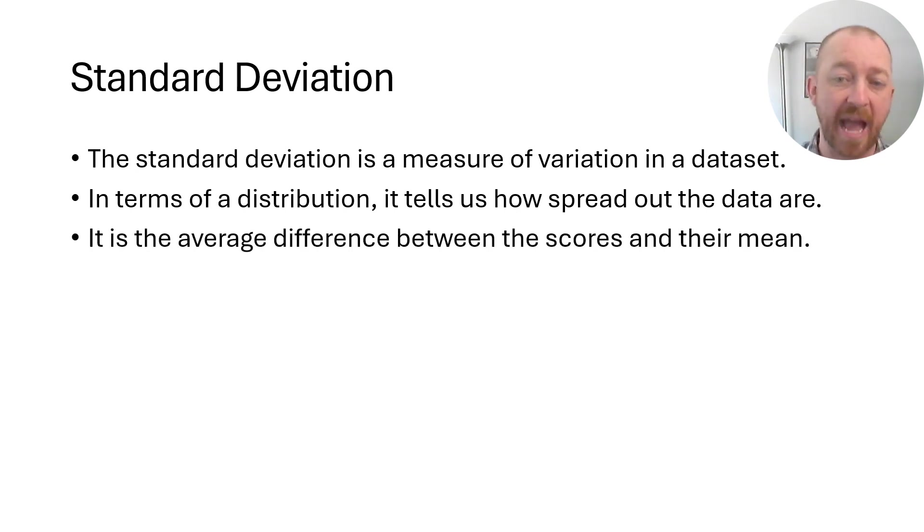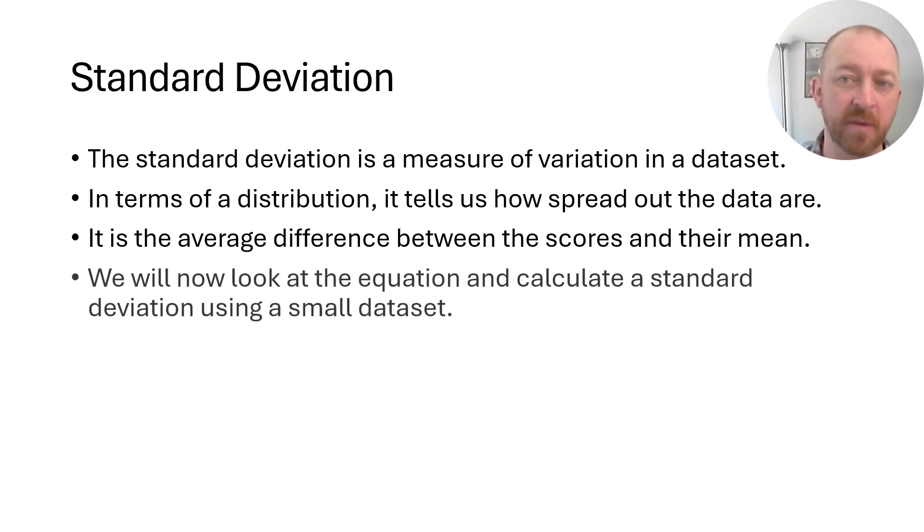By definition, it's the average difference between the scores that are in a data set and their mean together, and we'll see how that works in the equation coming up here in just a moment.